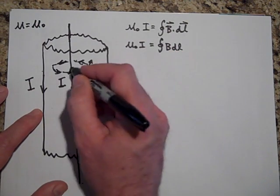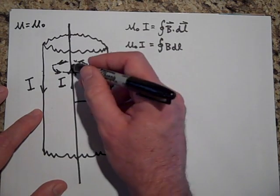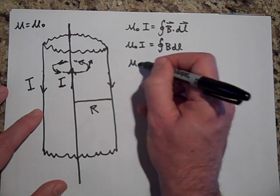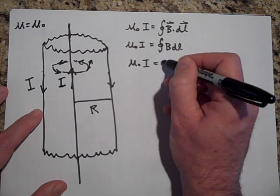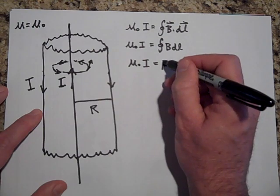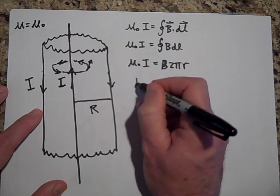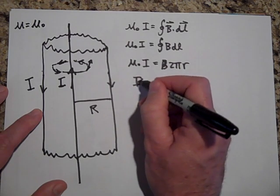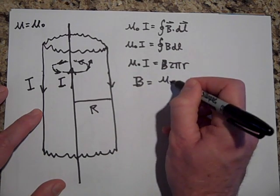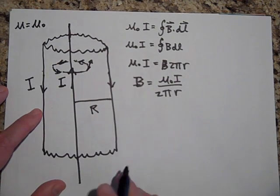So you can get rid of the dot product. And then you can pull the B out because it should be the same at every point in here. Remember, the only I that matters is the I through the Amperian membrane. So none of this outer I is going through there. And so you have μ₀I is equal to when you pull the B out, you can add all the DLs up and you get B·2πR. Okay, so the I, or the B rather, is going to be equal to μ₀I over 2πR.